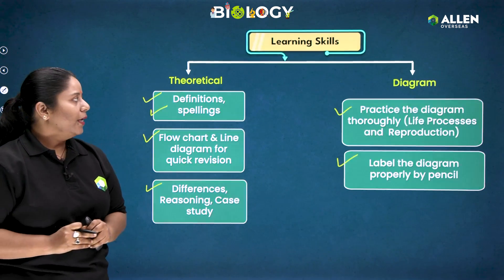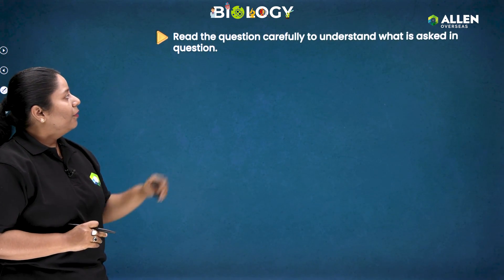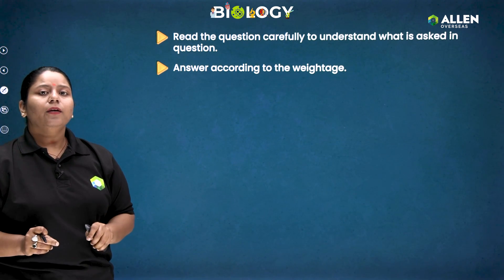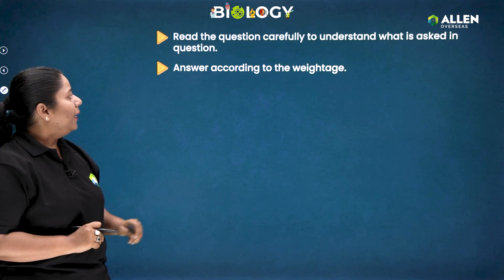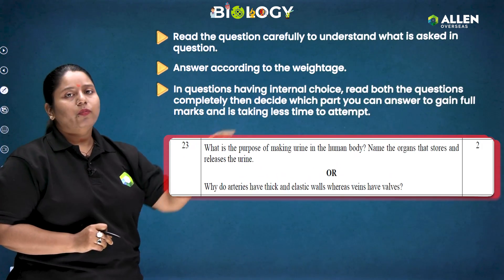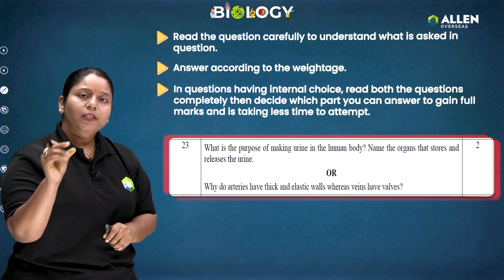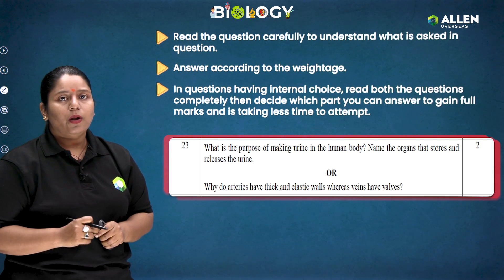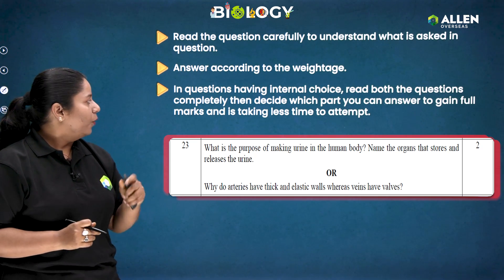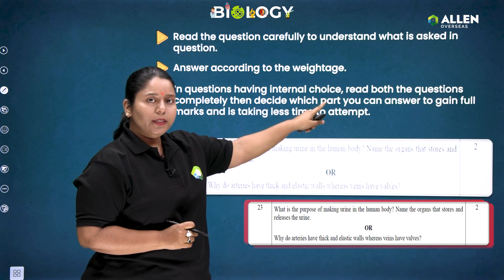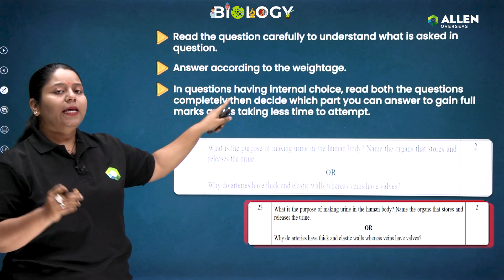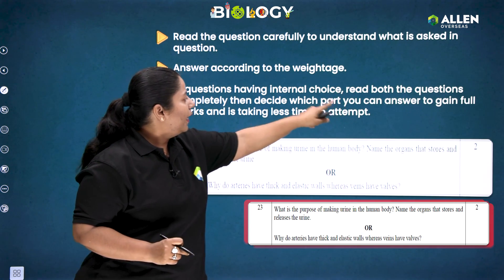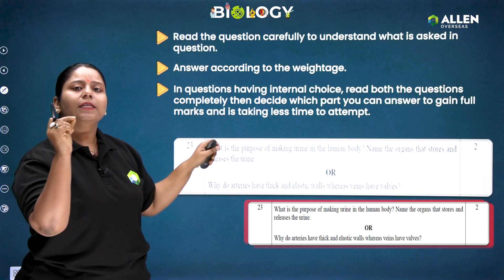When attempting the biology paper, read the question carefully to understand what is being asked, because understanding the question is really very important. Answer according to the weightage of the question — for a two-mark question, do not write a long paragraph. For questions with internal choices, read both questions completely, then decide which part you can answer to gain full marks while taking less time.